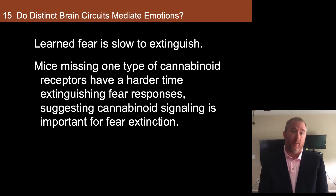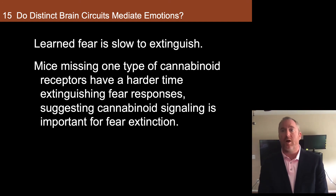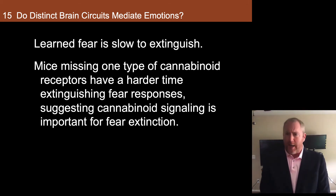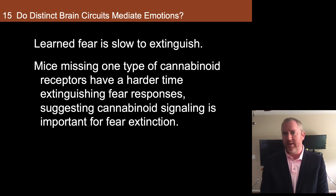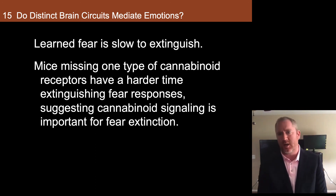Fear extinction can be even slower in mice that are lacking cannabinoid receptors. If the mice are missing cannabinoid receptors, you see even slower rates of fear extinction. The reverse happens if you treat the animal with endocannabinoids or increase their endocannabinoid levels. This was first demonstrated by a scientist in Bordeaux, France, by the name of Giovanni Marsicano in a seminal Nature study.